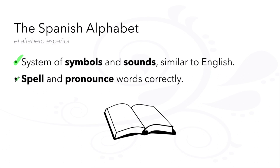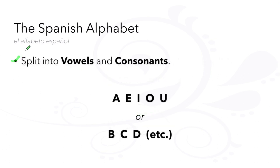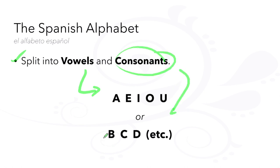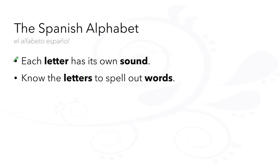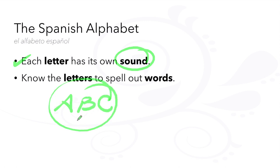The Spanish alphabet is a system of symbols and sounds, similar to English. It helps you spell and pronounce different words correctly. The Spanish alphabet is split into vowels and consonants. Each letter has its own sound in the alphabet, and you need to know all of these letters to spell out words correctly.